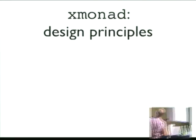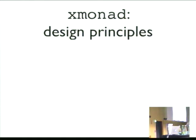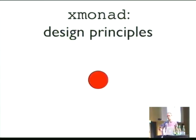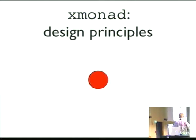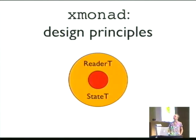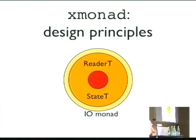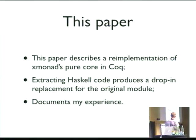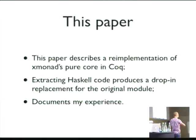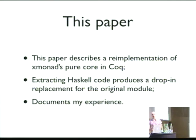A little about the design of XMonad — it's really well designed, written by John Stewart. He said: we started off with a pure functional core where we have our little model. We model all the windows, screens, and monitors. Around that we wrap some monads, then the IO monad, and all the communication with the X server happens at the very last part. This paper describes a re-implementation of that pure core of XMonad in Coq.